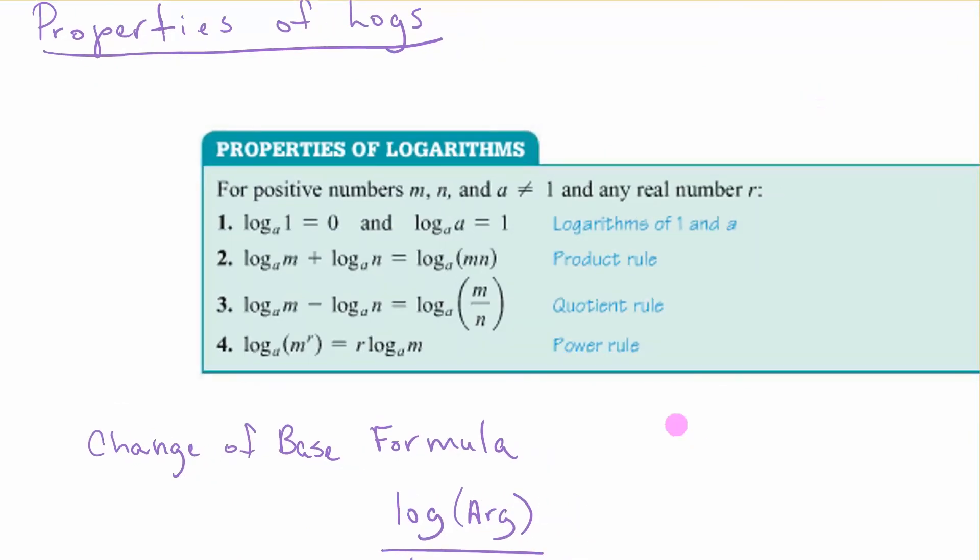Here are some properties of logs. Log base A of 1 equals 0. Log base A of A equals 1. Remember your exponents over here? A to the 0 power is 1. That makes sense. A to the first power equals A.